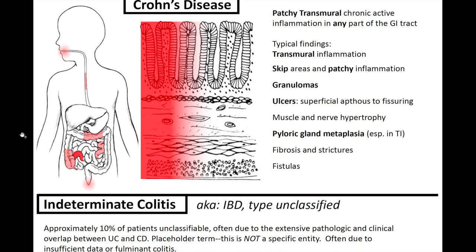There is also an entity known as indeterminate colitis or IBD type unclassified. Approximately 10% of patients are unclassifiable, often due to extensive pathological and clinical overlap between ulcerative colitis and Crohn's disease. This placeholder term is not a specific entity — it's often due to insufficient data or fulminant colitis.